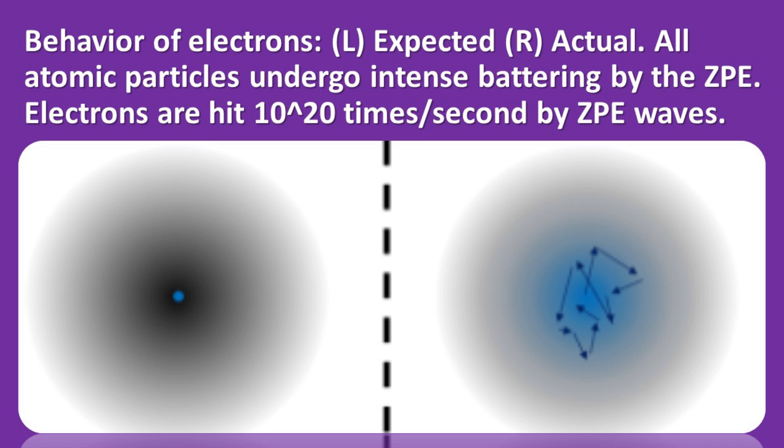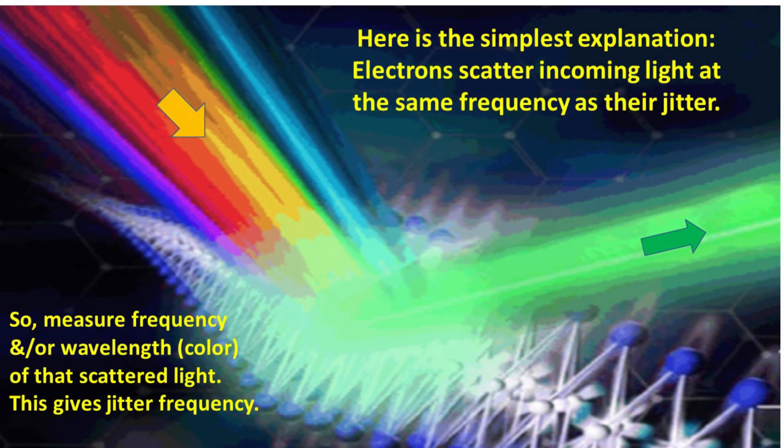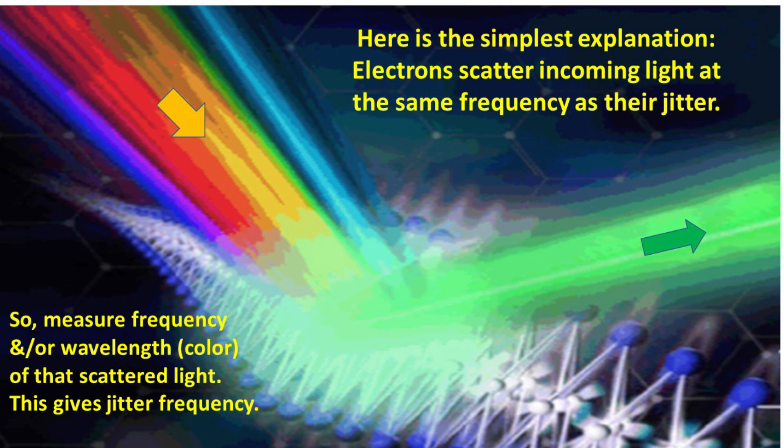Electrons are hit by the impacting ZPE waves and so jitter back and forth 10 to the 20th times per second. The question might be, how can we measure such a fast jitter? Here is the simplest possible explanation. Electrons scatter incoming light at the same frequency as their jitter. As shown here, incoming light has all the colours of the rainbow. However, jittering electrons will scatter that light, but in a special way. The light that is scattered will have the same frequency as the jitter. So we can measure the frequency and or wavelength or colour of that scattered light, shown green here. This gives us the jitter frequency. This is also called the Compton frequency and is the same as the number of hits per second by the ZPE waves.